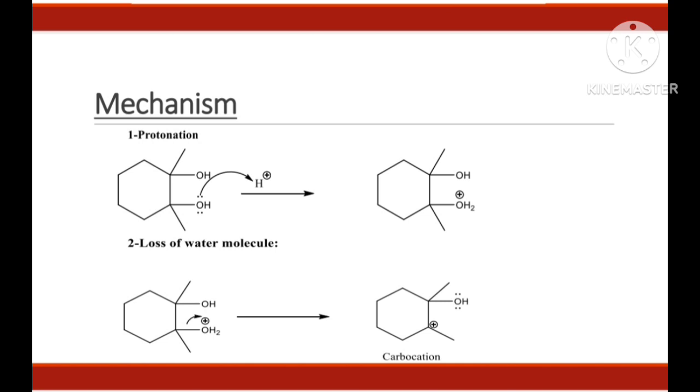First step is protonation. Since it is a symmetrical diol, so any one of OH molecule can be protonated and as a result of protonation we get OH2 positive molecule. Second step is loss of water molecule and formation of carbocation. Since in OH2 positive oxygen has a positive charge and it is highly unstable because it is not favorable for an electronegative atom to get positive charge. So, it will leave the system and we will get carbocation.